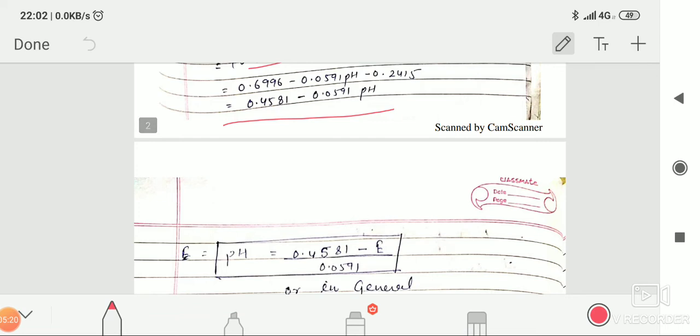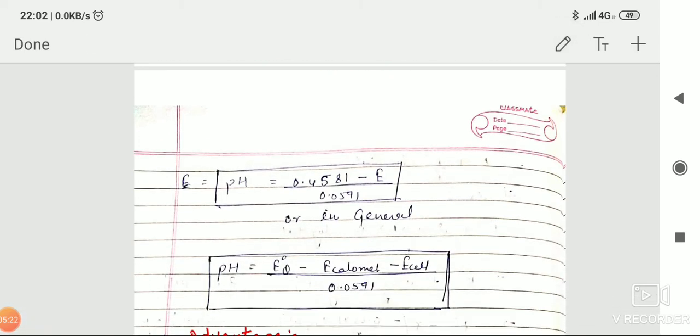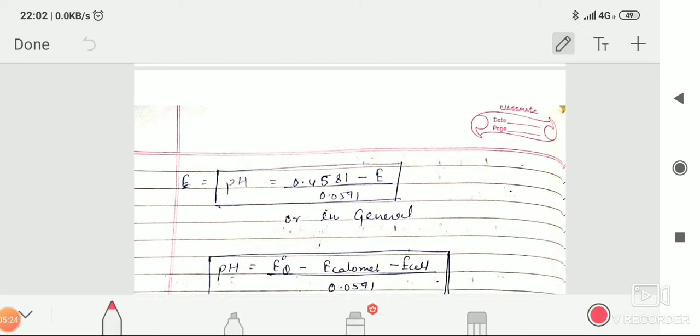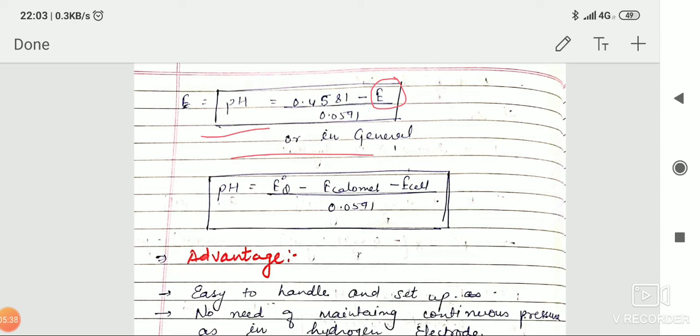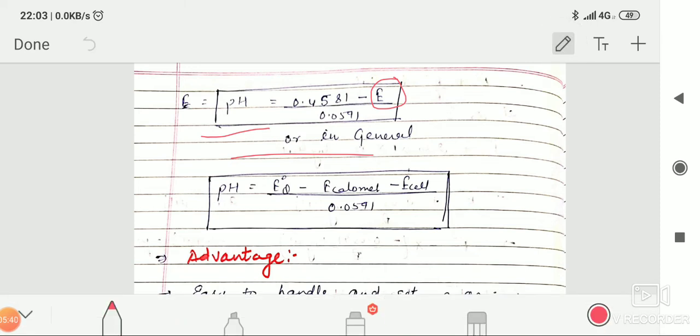Upon rearranging this particular equation, we get pH equals 0.4381 minus E. E is the EMF of the complete cell, total EMF of the cell, divided by 0.0591. Or in general, we can write pH equals E naught Q minus E calomel minus E cell upon 0.0591.